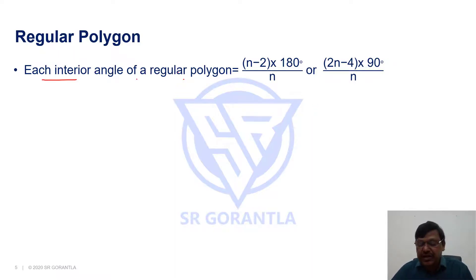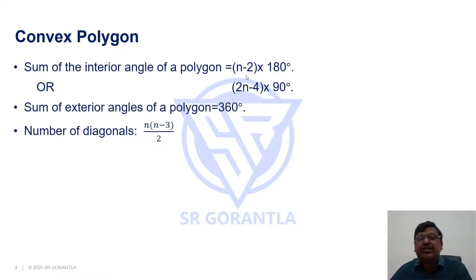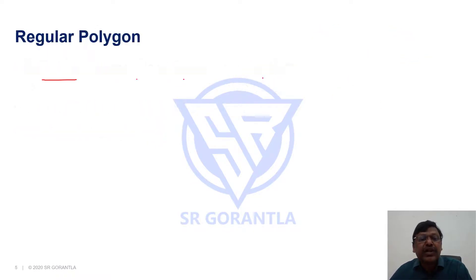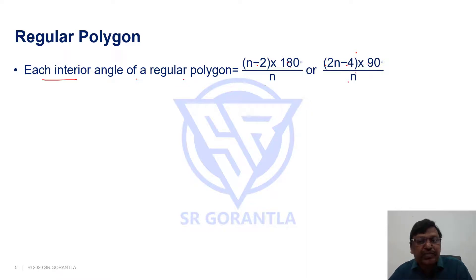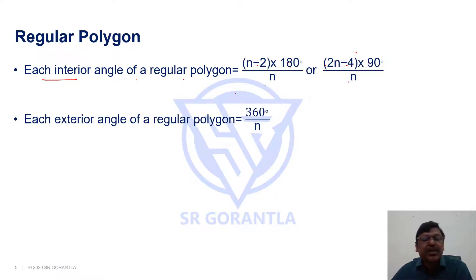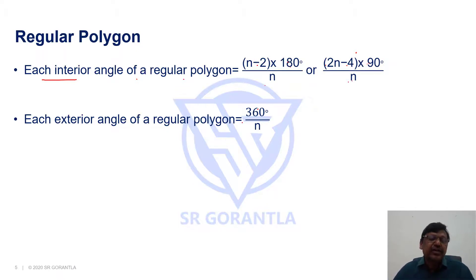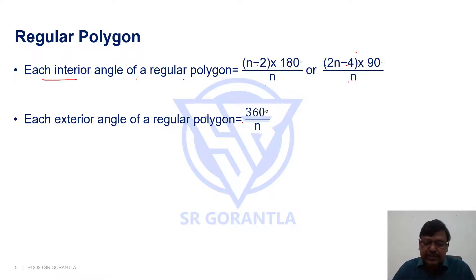Because all angles are equal, each interior angle of a regular polygon is (n − 2) × 180 / n, or equivalently (2n − 4) × 90 / n. Similarly, each exterior angle will be 360 / n, because the sum of exterior angles is 360 and each one is equal. So each exterior angle = 360 / n.